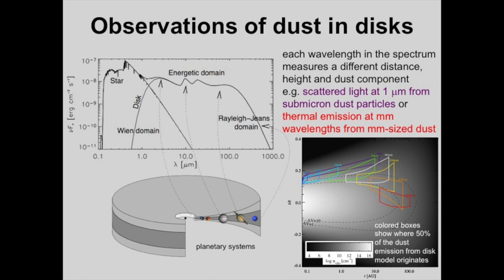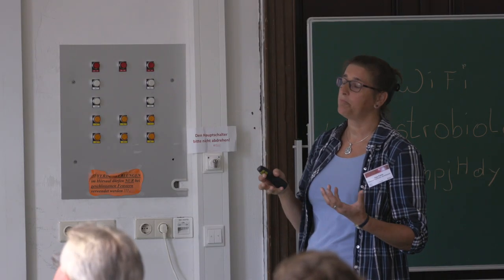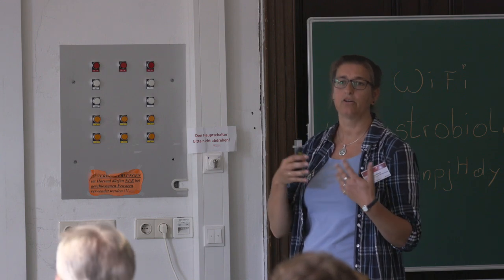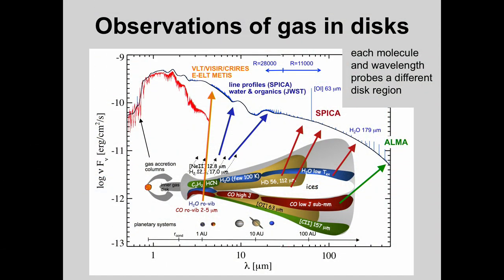Gas observations are more complex than dust because gas is not a continuous radiator. We do not have a single gas — there is carbon, oxygen, and other elements forming molecules like CO, water, HCN, and others. All these molecules have discrete energy levels and radiate at very specific wavelengths. For example, the CO molecule at low temperatures of 5–50 Kelvin shows low rotational lines in the sub-millimeter, while at ~1000 Kelvin it also starts to vibrate, producing low vibrational transitions at much shorter wavelengths around 2–5 micron.